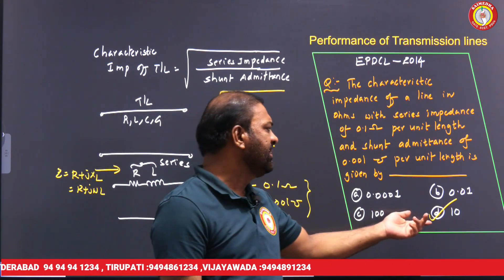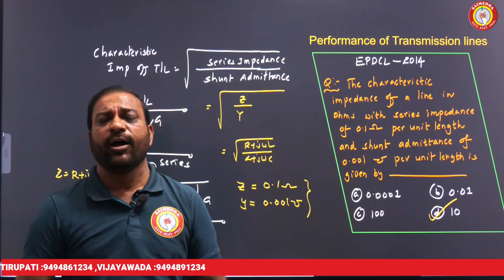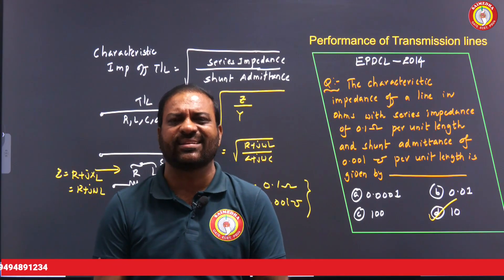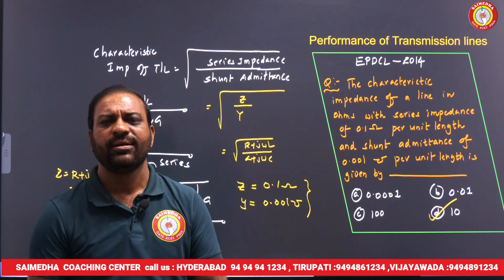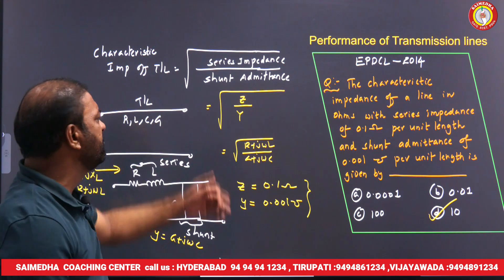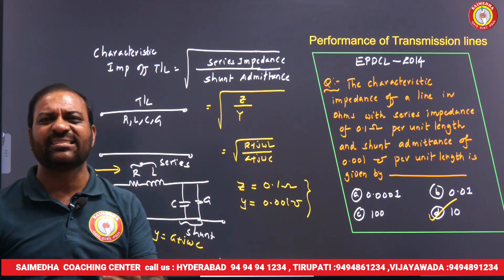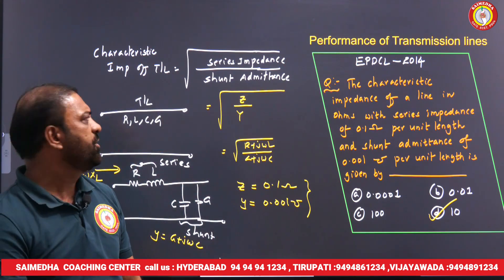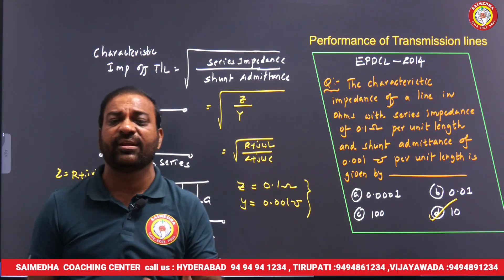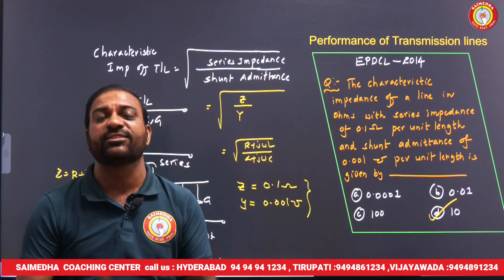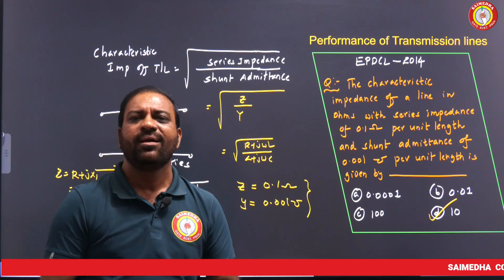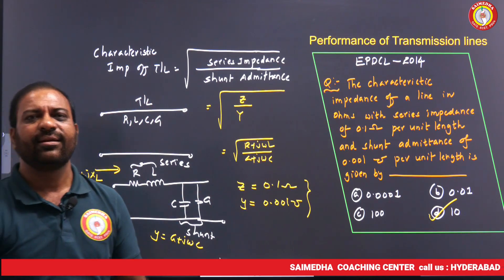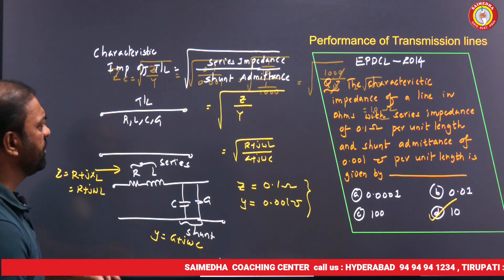The characteristic impedance is 10 ohms. The expression for characteristic impedance is Z_c = √(Z/Y), where Z is series impedance and Y is shunt admittance. It is formed from the transmission line parameters: resistance, inductance, capacitance, and conductance.